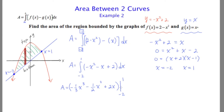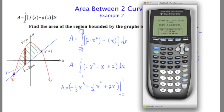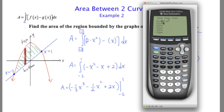I'm going to stop there and let you work out that evaluation. But I will show you how to check this on the calculator. I'm going to enter the top function under y1, which is the quadratic, or 2 minus x squared. The bottom function under y2 is going to be just y equals x. I'll do a quick sketch to see if that matches what we had sketched, and it does.